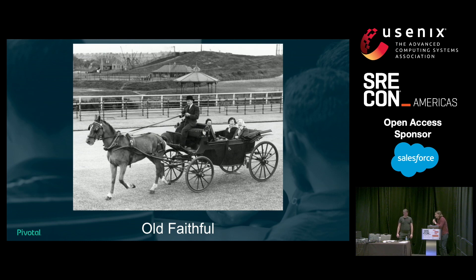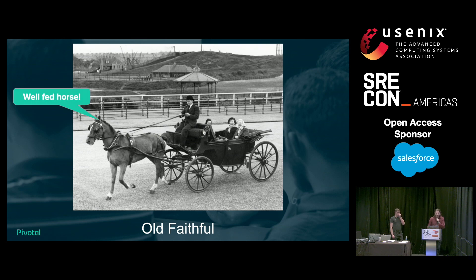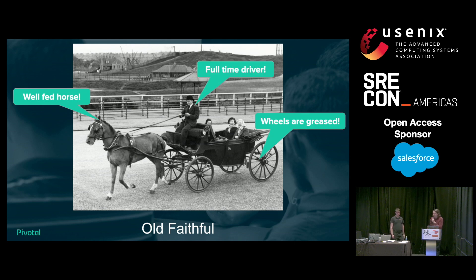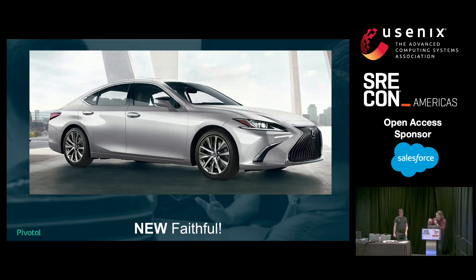In addition to being secure and available, don't your customers want to be running the latest and greatest things? Here we have a horse and carriage — it works, it can get you from point A to point B, you have a well-fed horse, a full-time driver, and greased wheels. It's reliable and relatively safe. But I'm guessing I can't charge my iPhone — they don't come with a USB charger. You know what does? This fine automobile — a new Lexus, known to be very reliable, with all the new safety features. It has a USB charger and a lot of other things we've come up with in car technology over the last 100 years. This is what your customers really want.